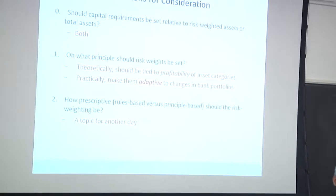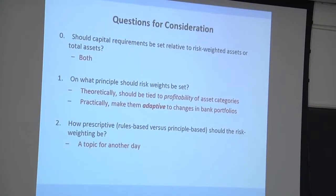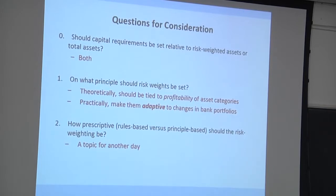So, a couple of other sort of broad questions to think about in thinking about this question of risk weighting. So, should capital requirements be set relative to risk weighted assets or total assets? I think the right answer here is both. I mean, if you ignored risk completely, then you're sort of penalizing banks that hold safer assets versus riskier assets. On the other hand, since you never really believe you're going to get the risk weighting scheme completely right, I think it also makes sense to have an overall leverage ratio, which the U.S. has always had, not Europe. In fact, there was recently a bill introduced that would have taken the U.S. completely off of the risk weighting scheme. I think that's unlikely to be successful. So, I think the right answer is that you want to have both a risk weighted constraint and a constraint on total leverage.